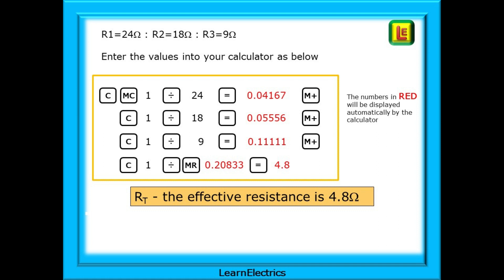1 divided by 24 equals, and the display will show 0.04167 or very similar. Now press memory plus to put it into memory. C for clear, 1 divided by 18 equals, and 0.05556 is displayed. Press memory plus, and this will be added to the memory.